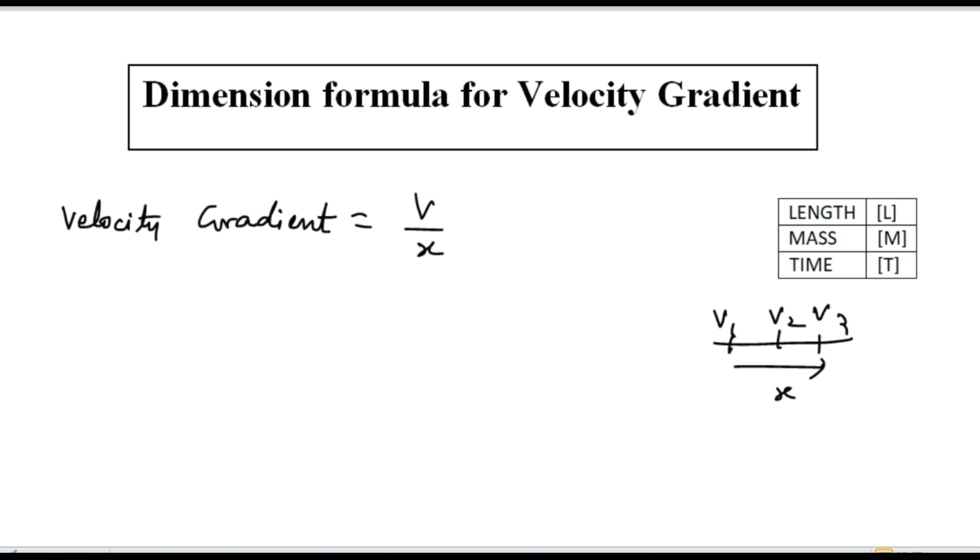First we calculate the dimension formula for the velocity, then the distance. Velocity dimension equals displacement by time.